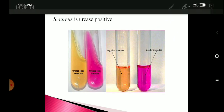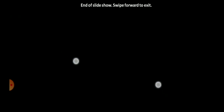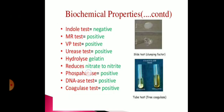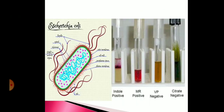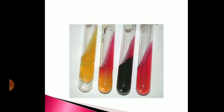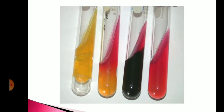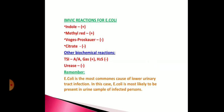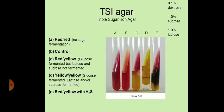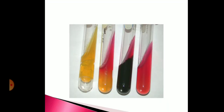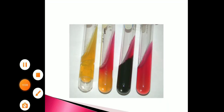It also produces the enzyme catalase. Looking at the four TSI tubes, the second tube shows only the butt fermented — sugars present in the butt have been fermented — and this reaction is most often shown by Staphylococcus aureus. That is all about the identification of Staphylococcus aureus.